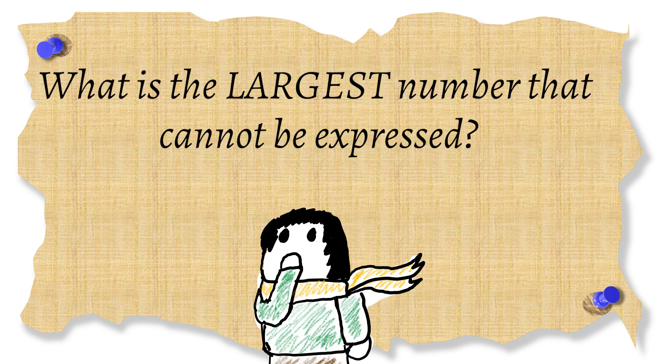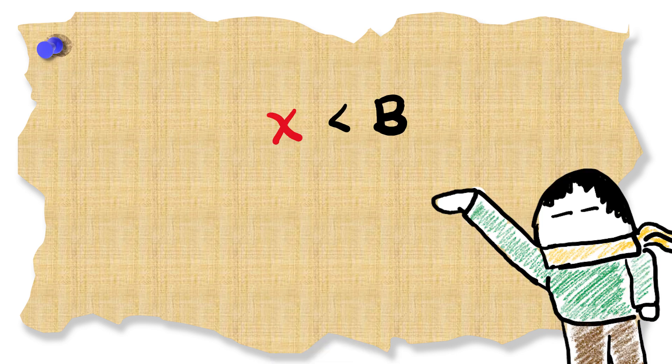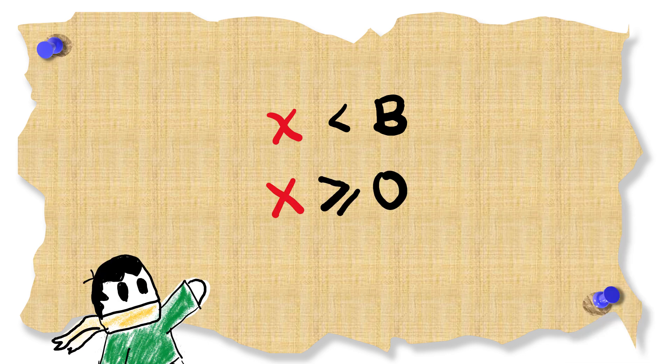So what's the largest number that cannot be expressed? Well what do we know about x and y? x has to be less than b but not negative because it's remainder and as we cannot express n y must be a negative value.